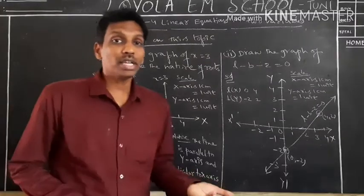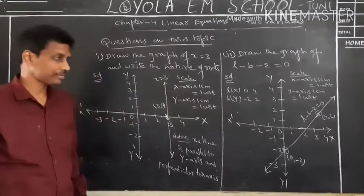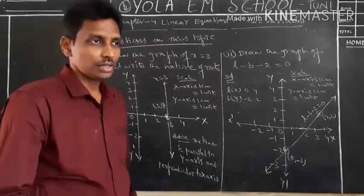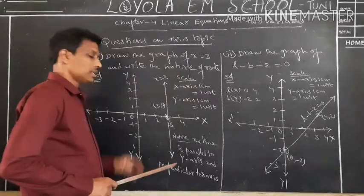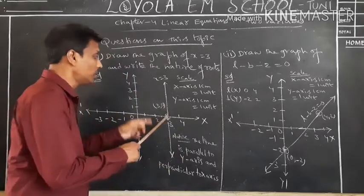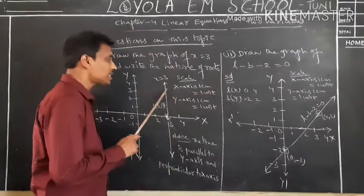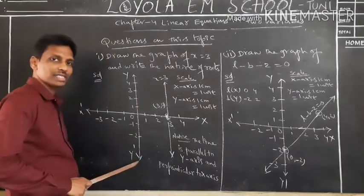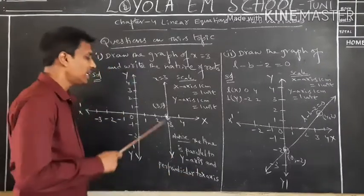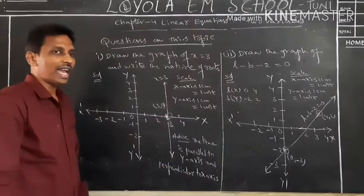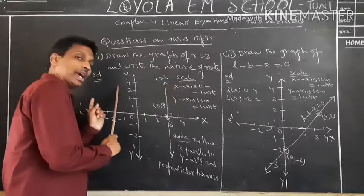We represent the point (3, 0) on the x-axis and through that point draw a straight line indicating x = 3. The nature of this line: the line x = 3 is parallel to the y-axis and perpendicular to the x-axis, making an angle of 90 degrees with the x-axis.